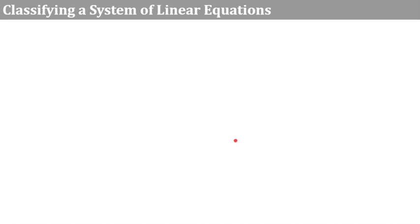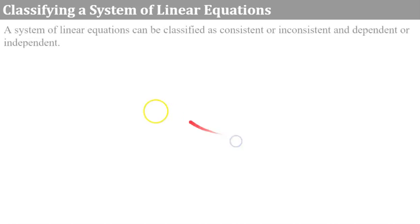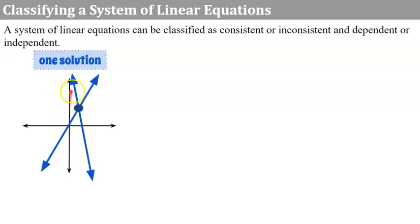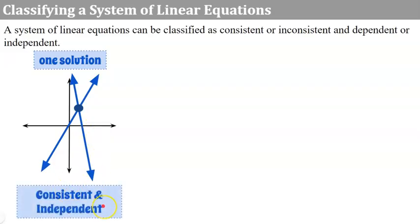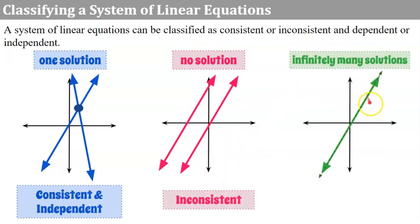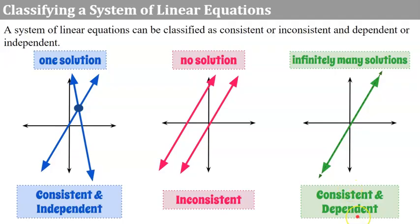Now let's talk about classifying a system of linear equations. A system can be classified as consistent or inconsistent and dependent or independent. When lines intersect at one point, we have one solution and classify it as consistent and independent. When lines are parallel with no solution, the system is inconsistent. When lines are the same with infinitely many solutions, the system is consistent and dependent.